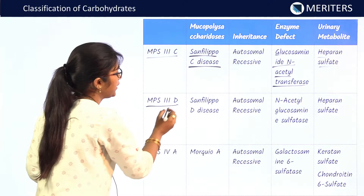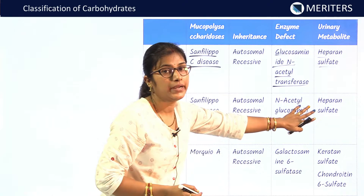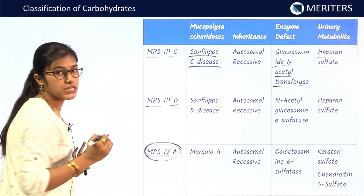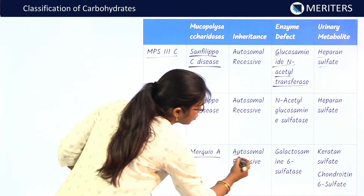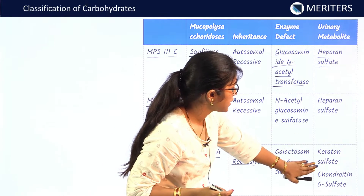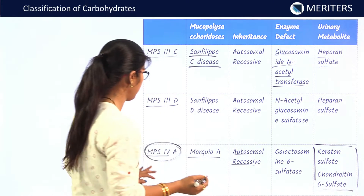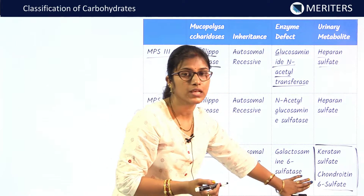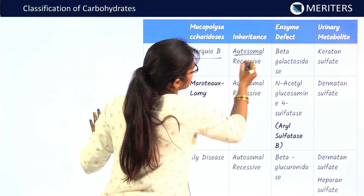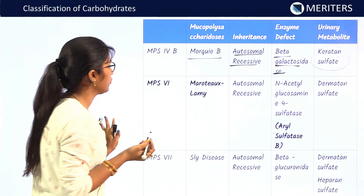MPS3D is Sanfilippo D — autosomal recessive, different enzyme, same urinary metabolite heparan sulfate. MPS4A is Morquio A — autosomal recessive, enzyme defect is galactosamine-6-sulfatase, urinary metabolites are keratan sulfate and chondroitin-6-sulfate. MPS4B is Morquio B — autosomal recessive, enzyme is beta-galactosidase, urinary metabolite is keratan sulfate.